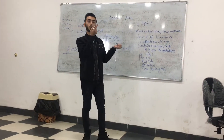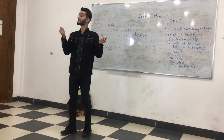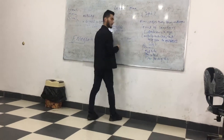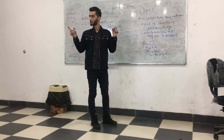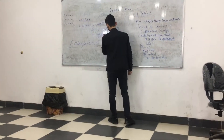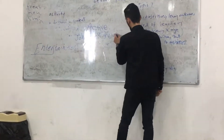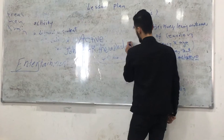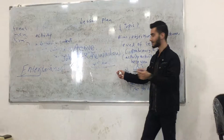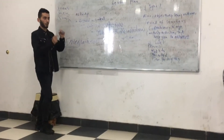John broke the window. Now here, the doer of the verb is very obvious. Who is the subject? John. John is doing the action — he is breaking the window.